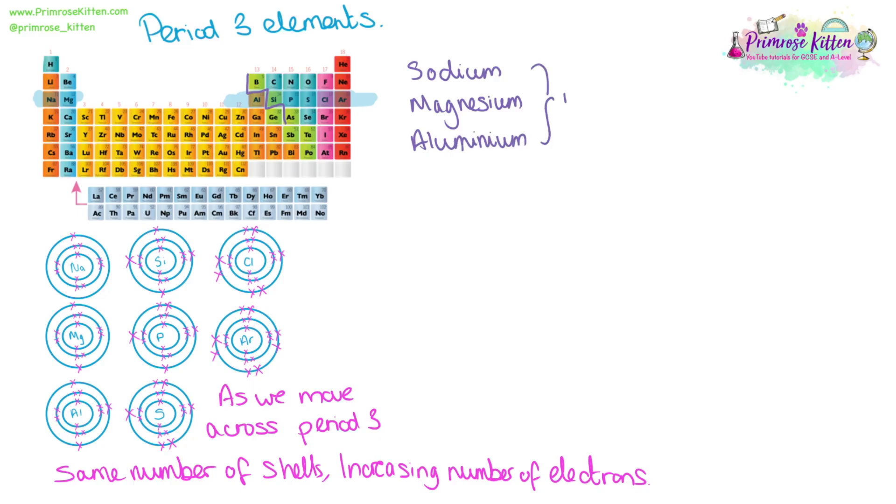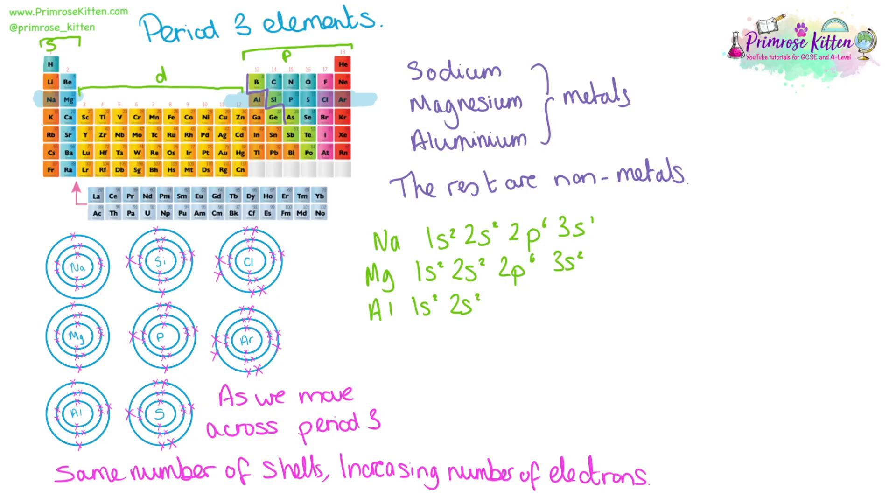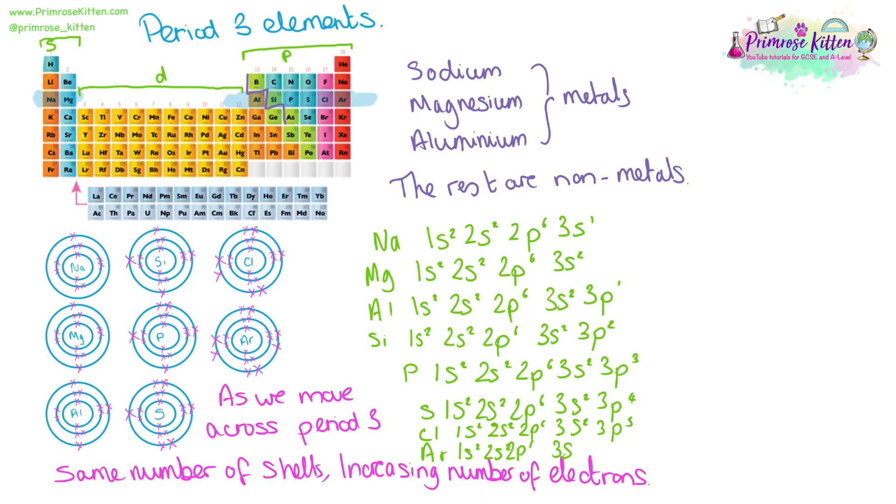Sodium, magnesium, and aluminum are metals, and the rest are non-metals. If we look at the electronic configuration, we can start to get information on the properties. Sodium and magnesium are in the S block. Their electrons will end with this S shell. As we move across the group, we can start to see the P being filled up here, until we get to argon, which has a full shell. Sodium and magnesium are S block elements, whereas the rest of them are over in the P block.